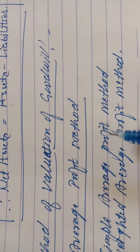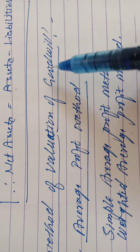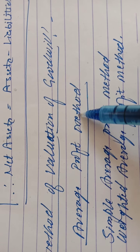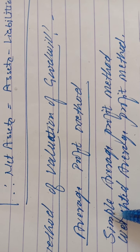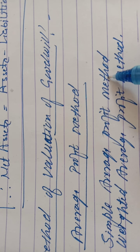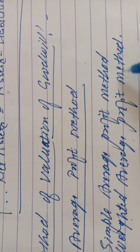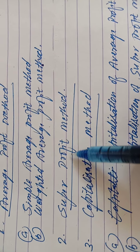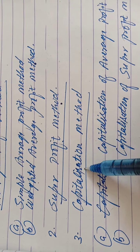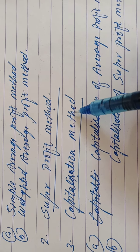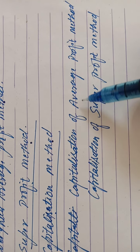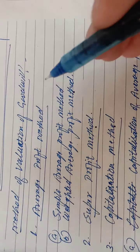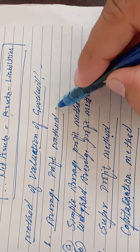Now, how to calculate Goodwill — there are some formulas. Methods of valuation of Goodwill: first is the Average Profit Method, which divides into two: Simple Average Profit Method and Weighted Average Profit Method. Second is the Super Profit Method. Third is the Capitalization Method, which divides into Capitalization of Average Profit and Capitalization of Super Profit. We start with the Average Profit Method.